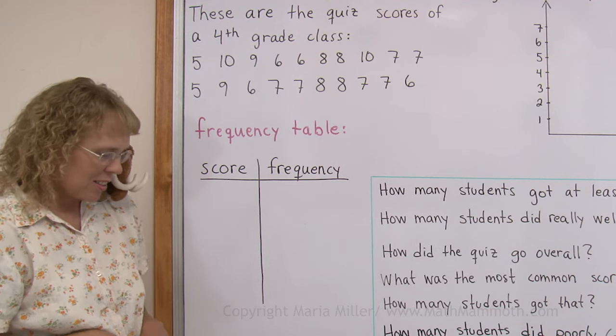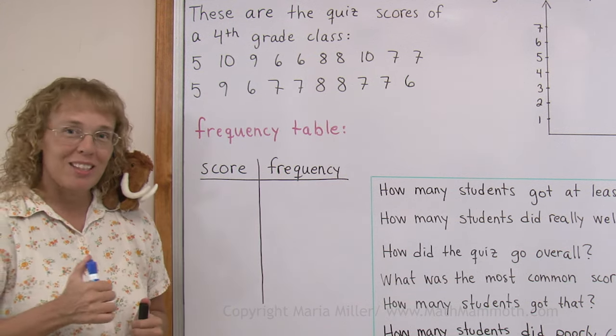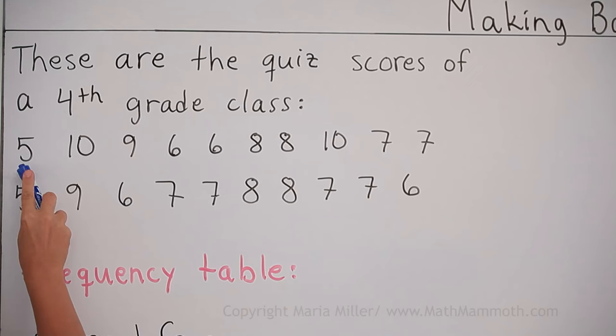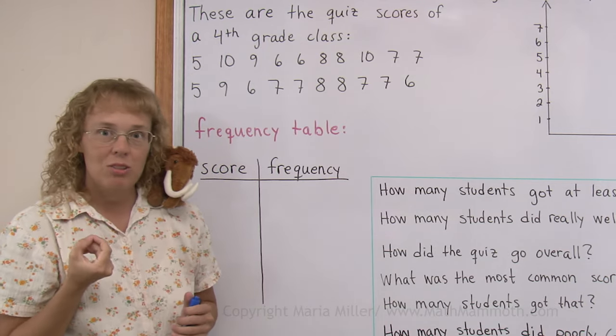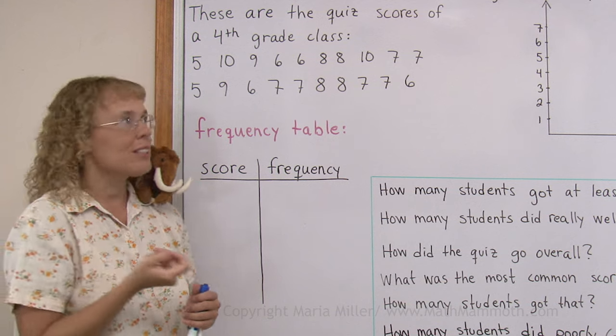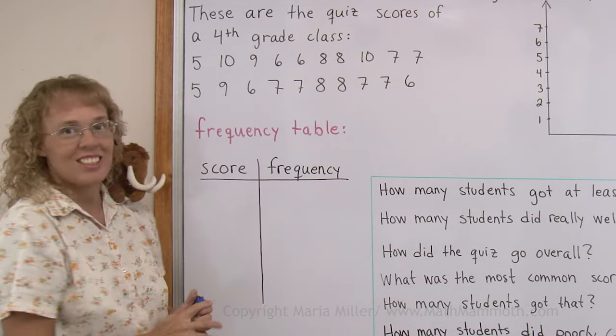What's that, Mathi? Oh, he's saying it was a math quiz, right? Yeah, we can think of it as a math quiz. And these are the scores. So for example, five means that one student got five in the quiz. Another student got ten. A third student got nine and so on.